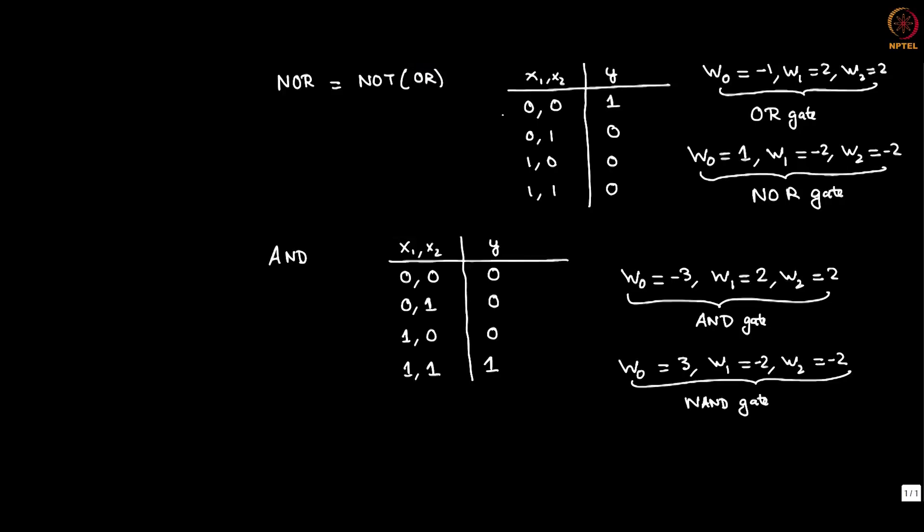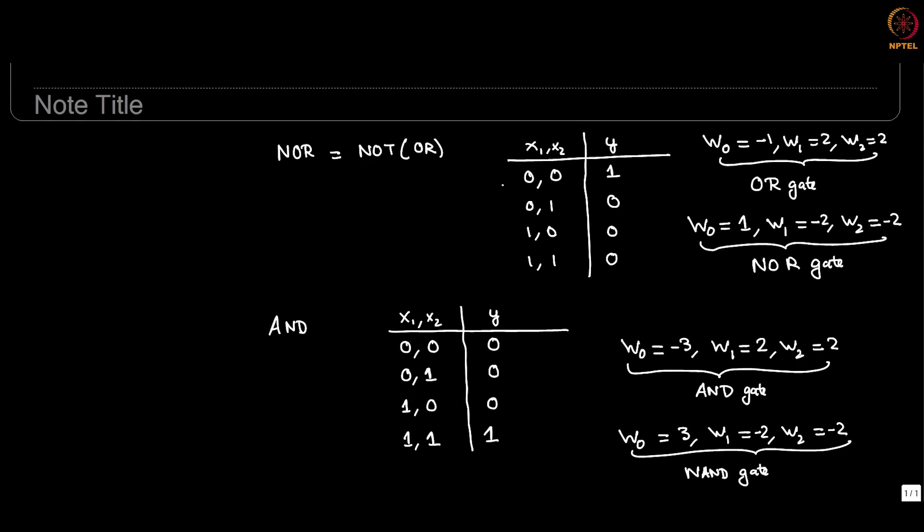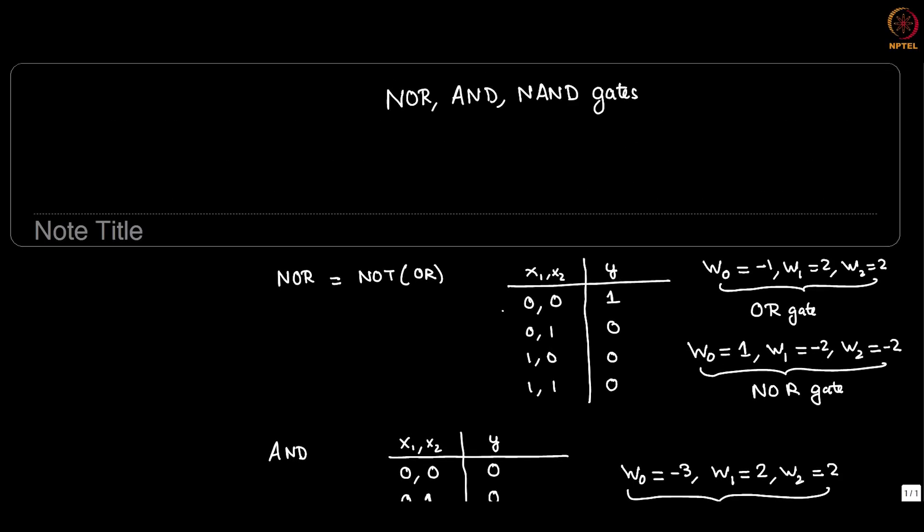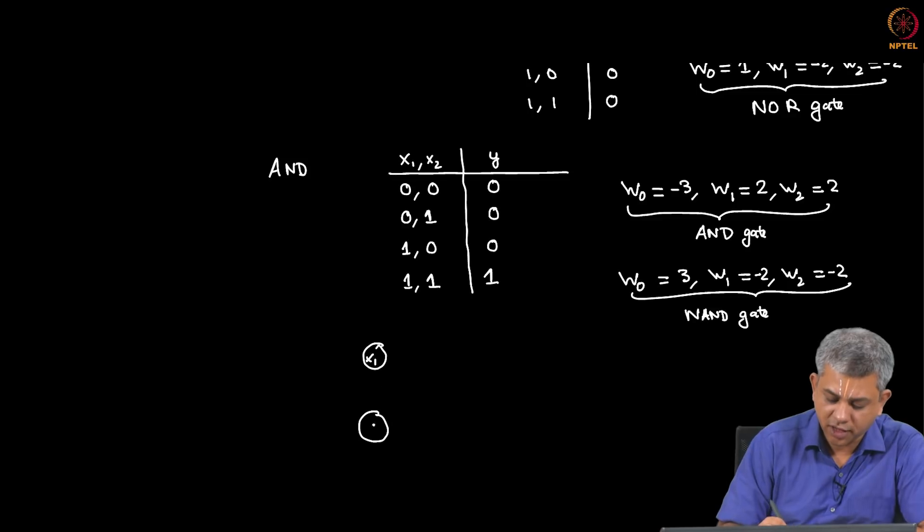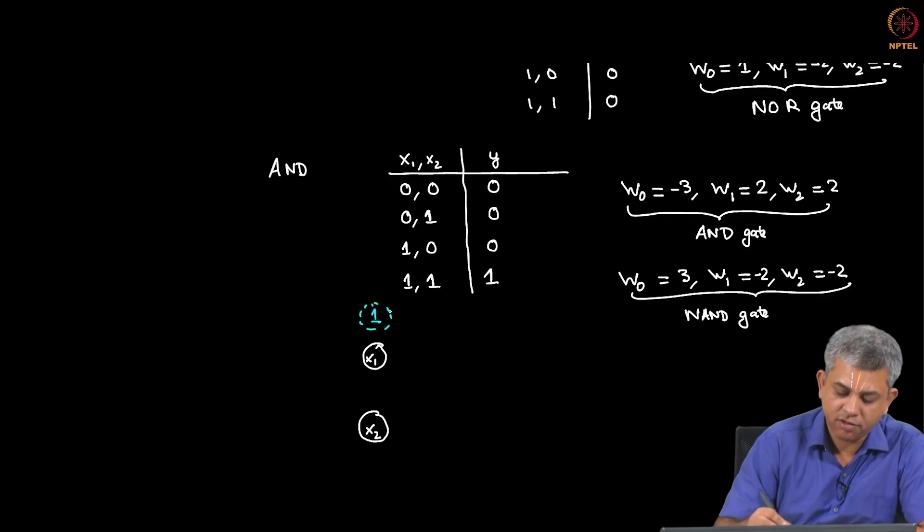So we saw in this video that very simple elementary gates OR, NOR, and NAND all of them can be represented by this simple architecture: X1, X2, a bias unit which is simply 1.